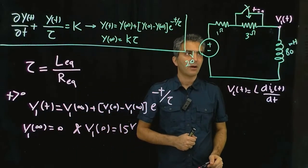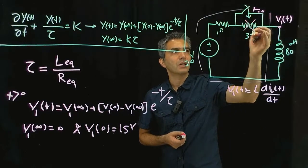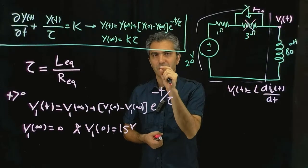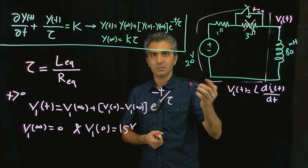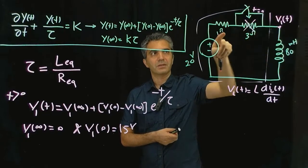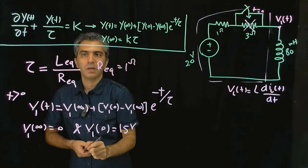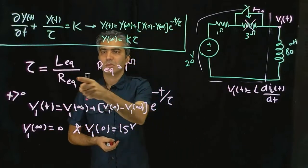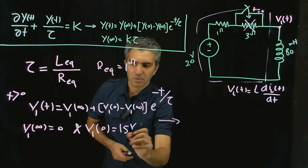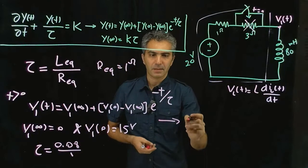All that's left is to calculate tau. After the switch, that resistor is gone. To find the equivalent resistance, we remove the inductor, set all independent sources to zero, and all that's left is the 1 ohm resistor. So the equivalent resistance is 1 ohm. The inductance was 80 millihenry, so tau = 80 mH / 1 Ω = 0.08 seconds.